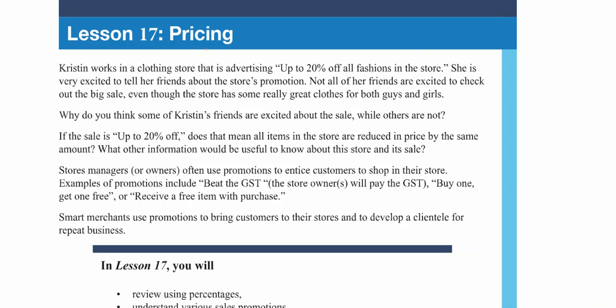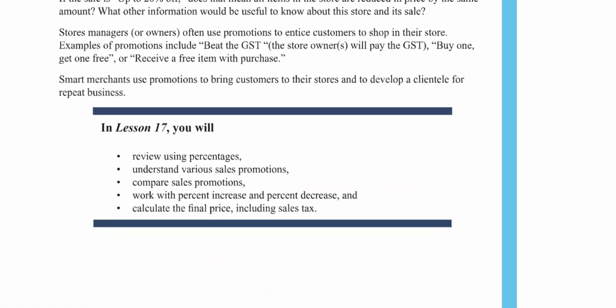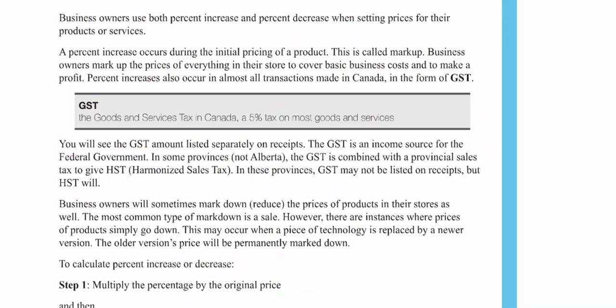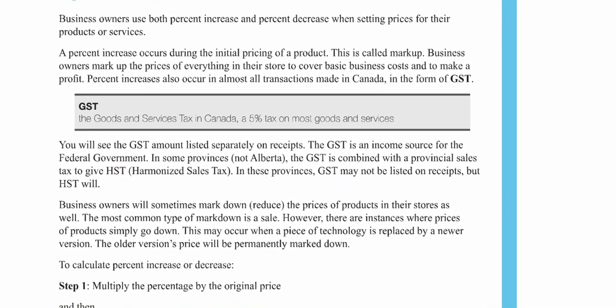Lesson 17: Pricing. This is a pretty practical lesson — we're going to be talking about things like discounts, like getting 20% off something in a store, figuring out a 15% tip, or calculating the GST on something. So figuring out prices — like what you would actually pay at the till — is quite often what we're doing here.